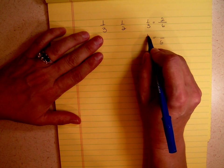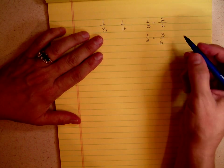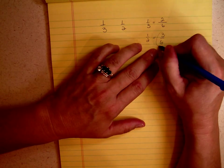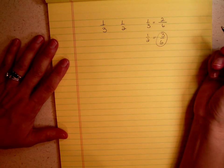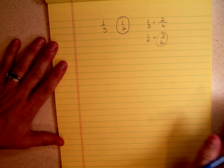2 times 3 gives me 6, so 1 times 3 gives me 3. Then you simply look which is bigger, 3 sixths or 2 sixths? Obviously 3 sixths is bigger, so one-half is bigger.